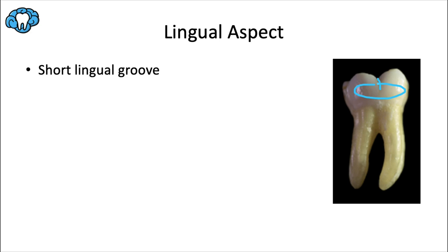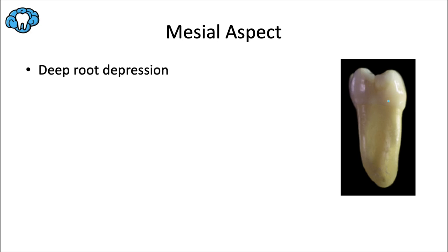For the mesial aspect, the mesial surface of the root usually has a pretty deep root flute or depression, and the same is true for the distal side of that root — making the mesial root overall biconcave. It typically houses two separate root canals that are separated by this root fluting, and we'll see a better picture of that later in the video.